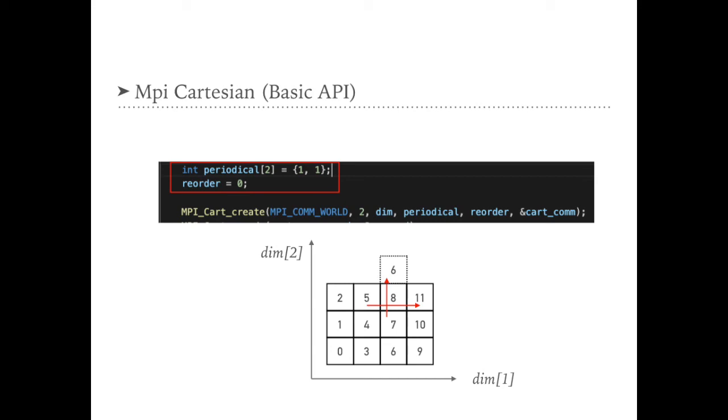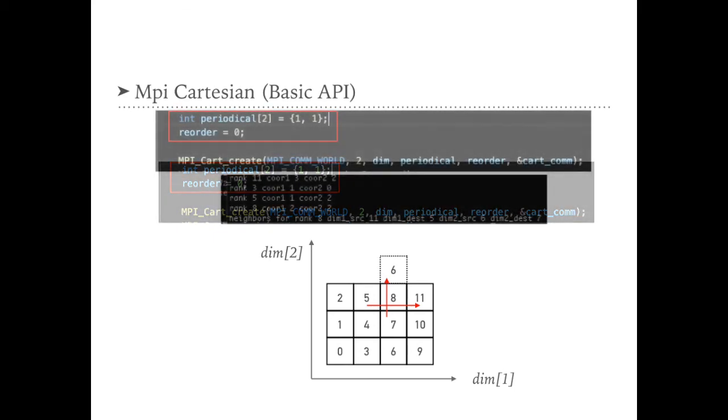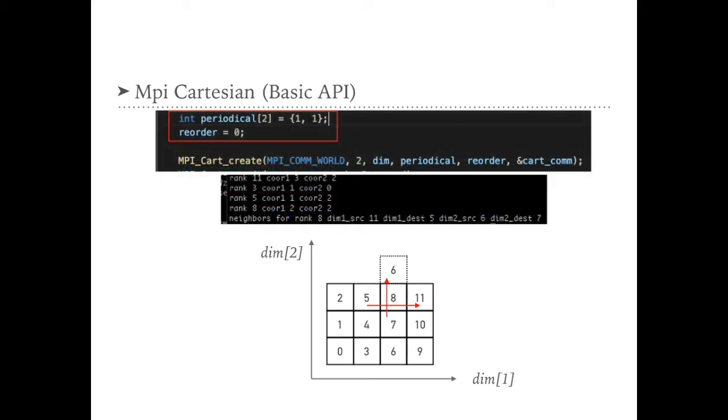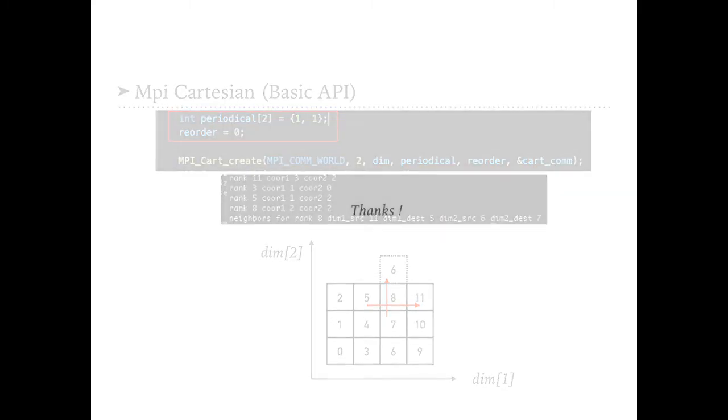So for this case, the next value in the vertical direction will jump back to the first value. So the next value of the number 8 will be the number 6. This is the output. We could see that the dimension 2 dest is number 6, which is actually the first element in this direction.